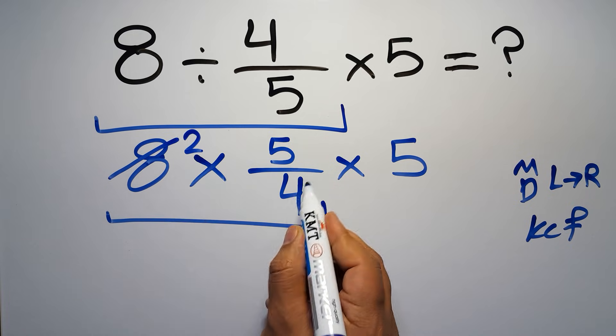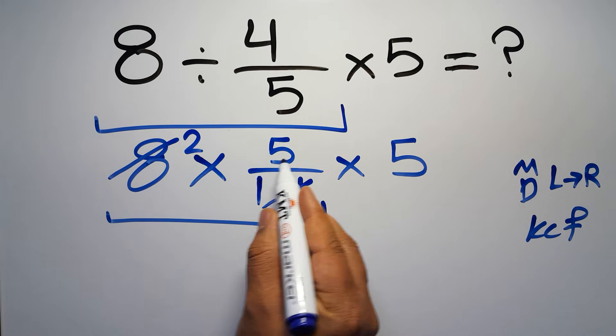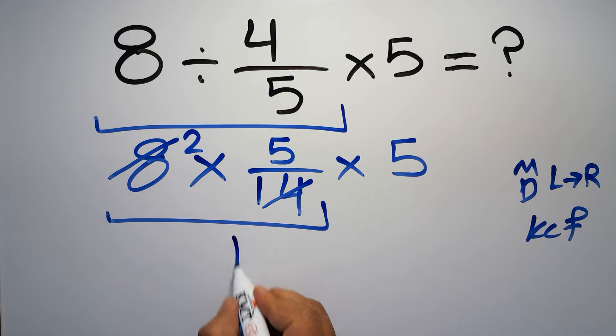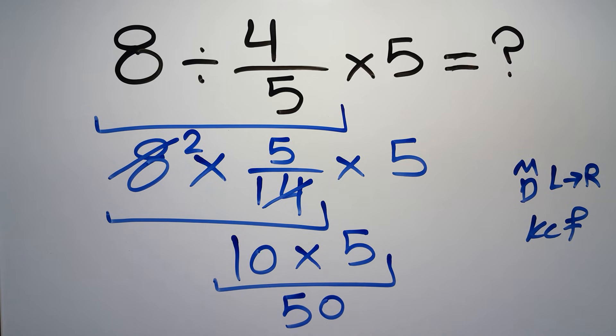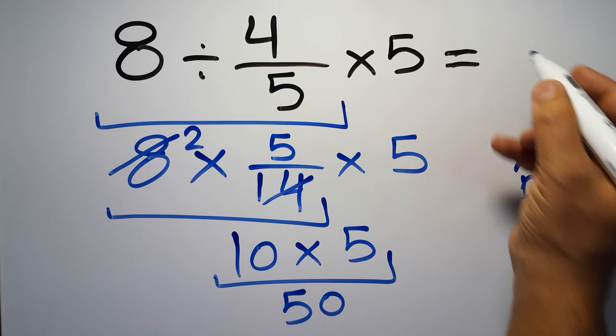So 2 times 5 equals 10, times 5 equals 50. And this is our final answer to this problem. The correct answer is 50.